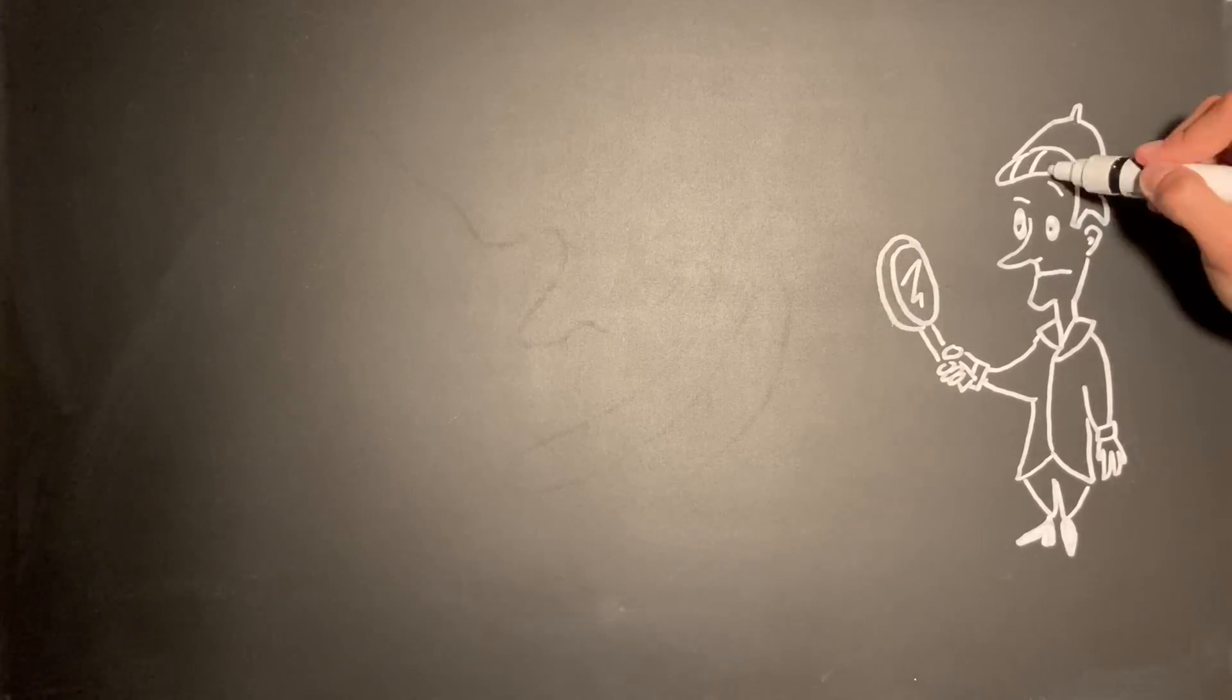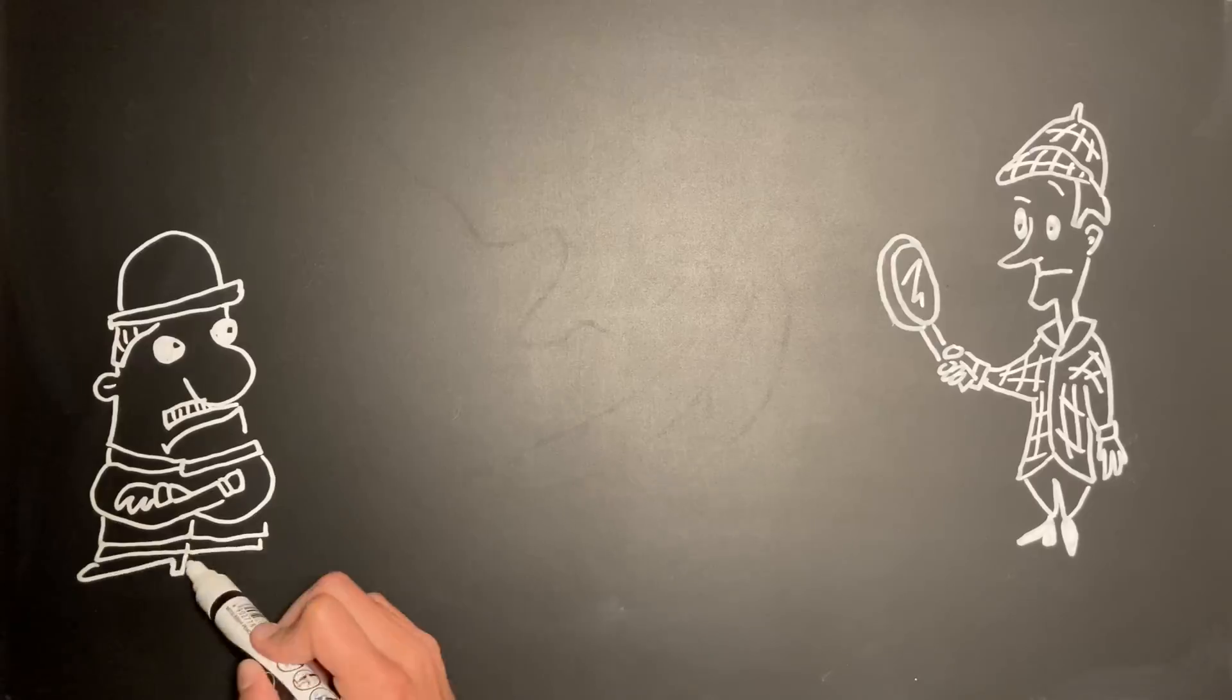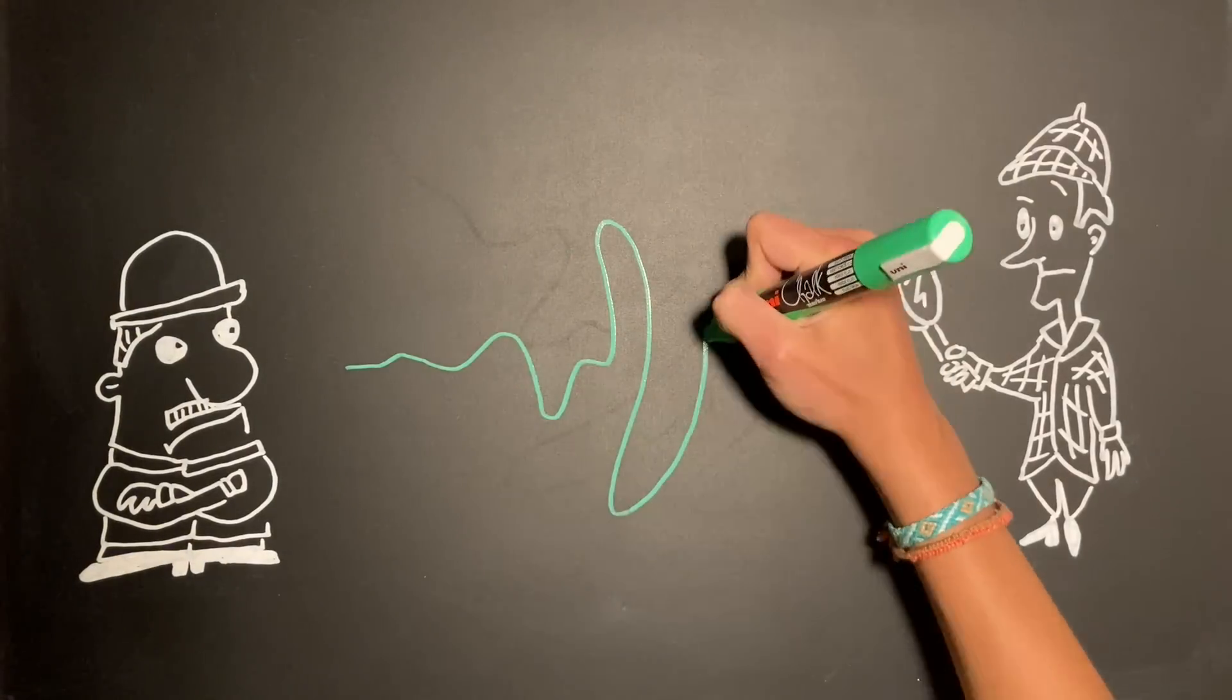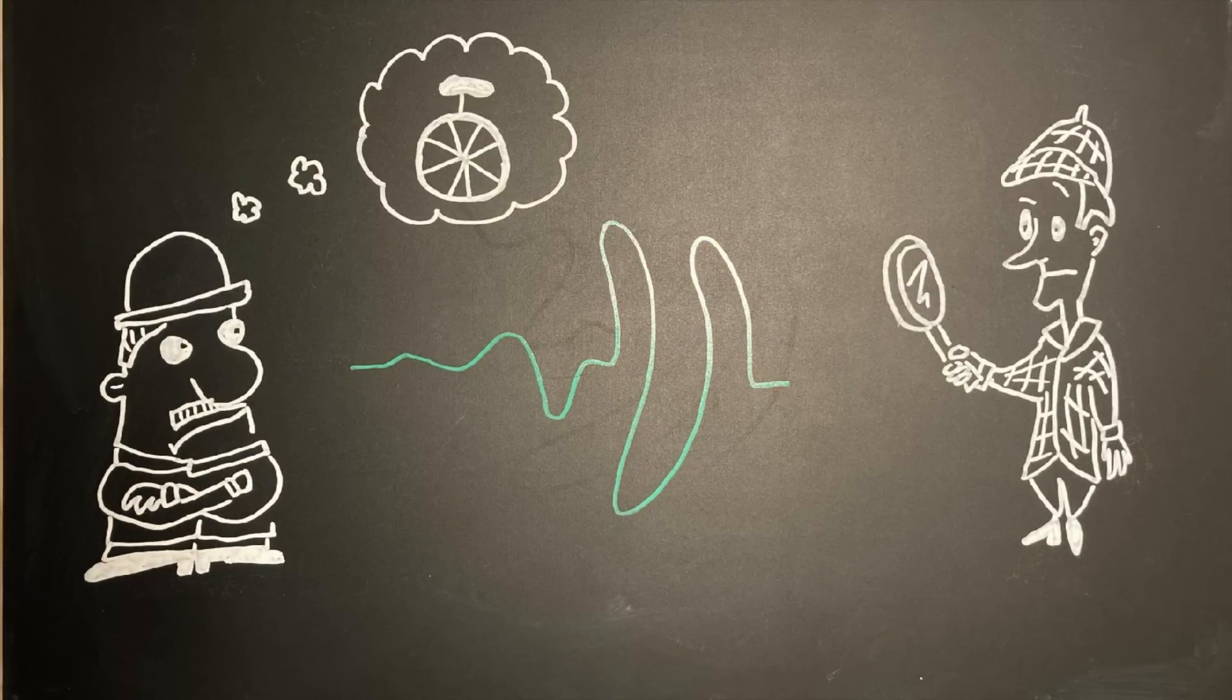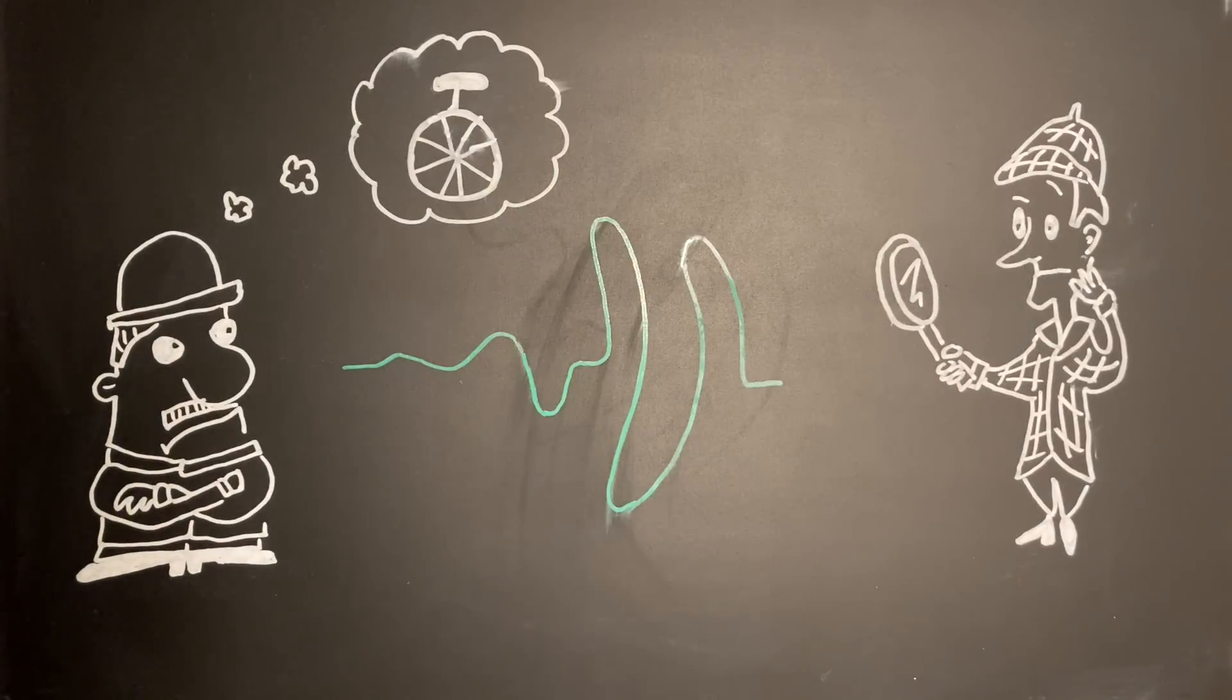Imagine that Sherlock Holmes and Dr. Watson discover a single tire track while walking down a path at the Priory School. Watson believes a unicycle must have created the track, but Holmes isn't so sure. The question is, can a bicycle create the track of a unicycle?